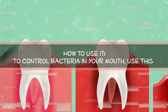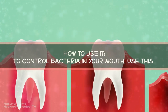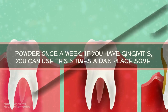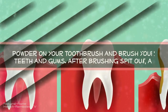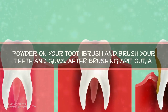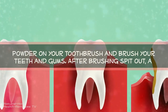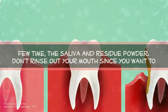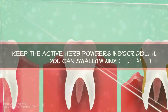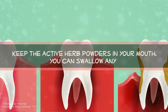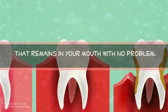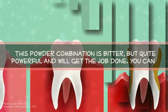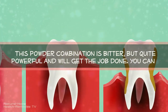How to use it. To control bacteria in your mouth, use this powder once a week. If you have gingivitis, you can use this three times a day. Place some powder on your toothbrush and brush your teeth and gums. After brushing, spit out the saliva and residue powder a few times. Don't rinse out your mouth, since you want to keep the active herb powders in your mouth. You can swallow any that remains with no problem. This powder combination is bitter but quite powerful and will get the job done.